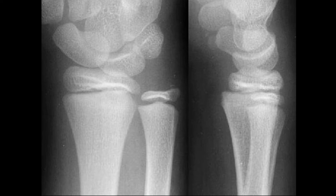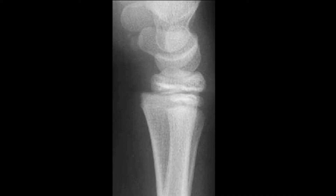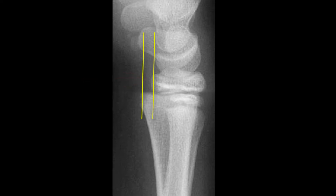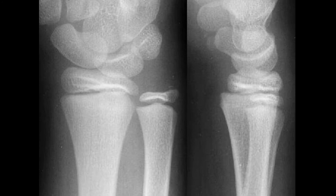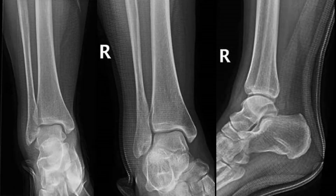X-ray number nine: a young girl who fell on an outstretched arm has pain in her wrist. The abnormality can best be appreciated on the lateral film. It's a displaced radial epiphysis — you can see the epiphysis is not centered over the metaphysis. A quick confession: I missed a very similar injury in one of my own children and I'm still apologizing for it. Like her, this patient required a closed, accurate reduction in the operating theatre.